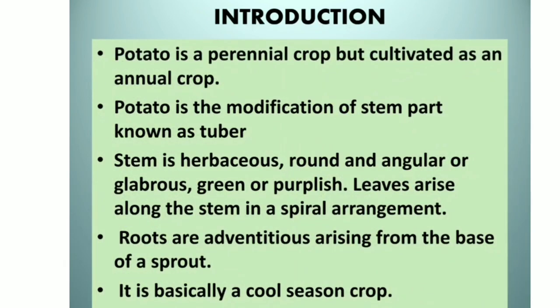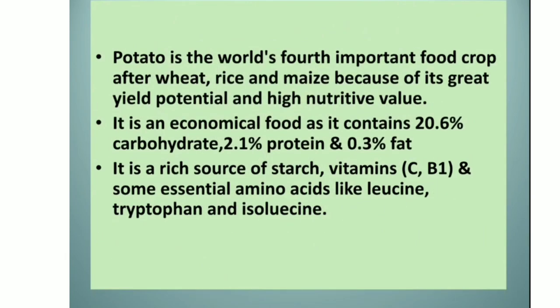Potato is a perennial crop but it is cultivated as an annual crop. Potato is the modification of the stem part which is known as tuber. The stem is herbaceous, round and angular or glabrous, green or purplish. Leaves arise along the stem in spiral arrangement. Roots are adventitious, arising from the base of a sprout. It is basically a cool season crop. Potato is the world's fourth important food crop after wheat, rice and maize. It is an economical food as it contains 20.6% carbohydrate, 2.1% protein and 0.3% fat.